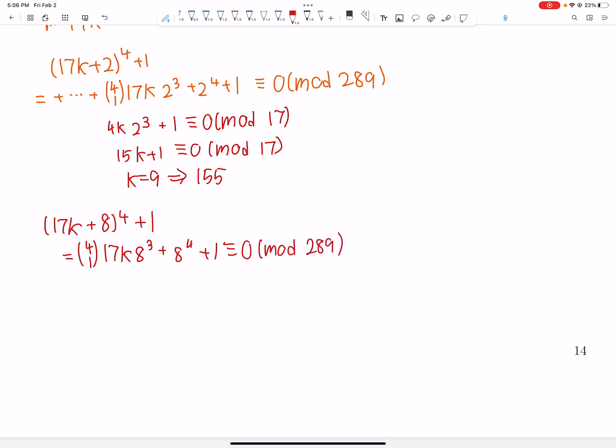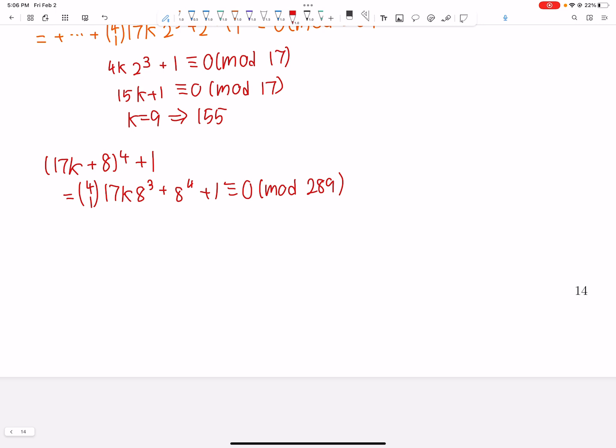We need this to be 0 mod 289. And now we just divide. We get 4 times 8 cubed plus 8 to the 4 plus 1. 8 to the 4 plus 1 divided by... So what you can do here is find 8 to the 4 plus 1. That's 4097. And then you take that mod 17. Or that's obviously going to be 0. So you take 8 to the 4 plus 1. You divide that by 17. You get 241. So now we have this.